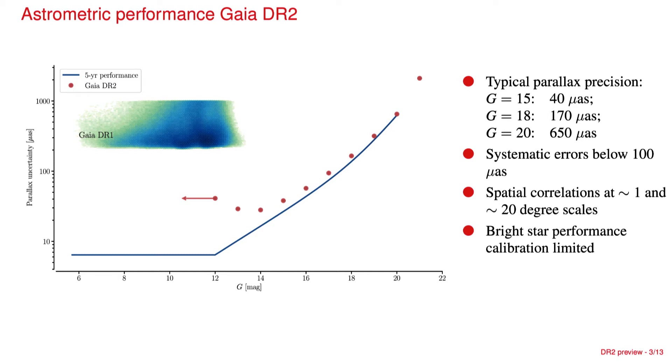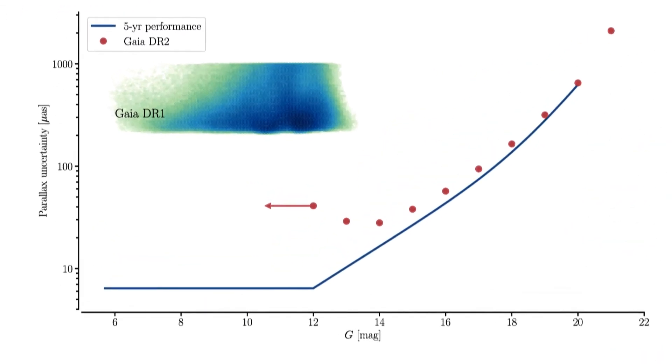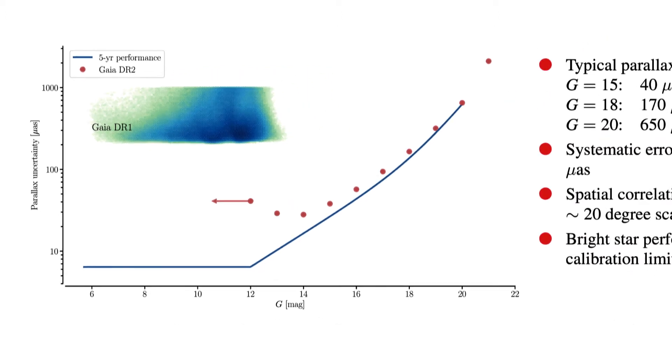Slide number three shows a very brief summary of the gain in astrometric performance by looking at the parallax errors as a function of the brightness of stars. What you see here is the performance of Gaia DR1, that's the shaded area where one is limited to stars brighter than about magnitude 12 to 13.